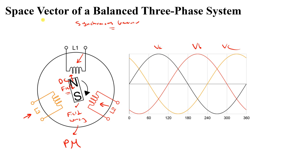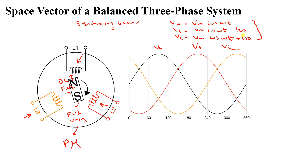Now what we would like to do is to draw the vector of these voltages. You will find that these voltages Va, Vb, and Vc are expressed as: Vmax·cos(ωt), Vmax·cos(ωt − 120°), and Vmax·cos(ωt + 120°) — three phases shifted by 120 degrees. Remember, this represents a magnitude: the magnitude of A, magnitude of B, and magnitude of C.